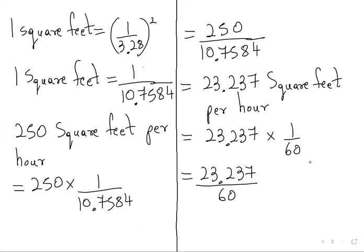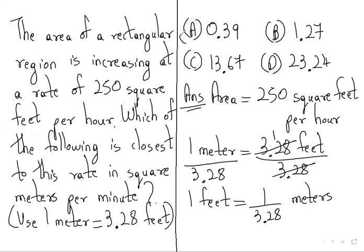23.237 divided by 60 equals 0.387 square meters per minute. The closest answer is 0.39, which is option A.